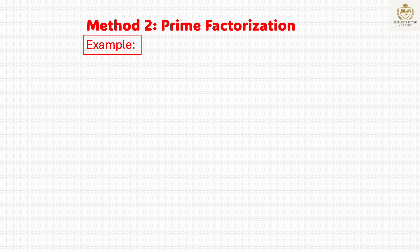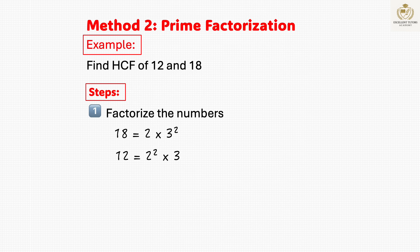Prime factorization also works for HCF. Let's solve an example using this method. What is the HCF of 12 and 18? Step 1: Factor each number into its prime parts. 18 is 2 times 3 squared. 12 is 2 squared times 3.